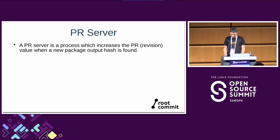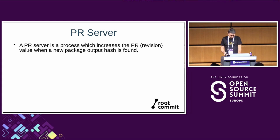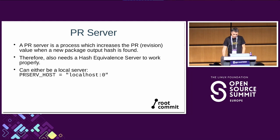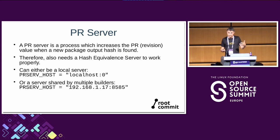Let's talk about the PR server. You need to manage revisions, and there's a process started by Yocto when enabled that computes the revision for the packages you build. Whenever there's a new output with a new hash when building a recipe, the revision is incremented — not the version number, but the revision — so the new package prevails over the previous one. This also requires a proper hash equivalence server. You can set the PR server as local using PR_SERVER_HOST, or point to a remote one, which allows sharing one server among multiple builders. If you don't set PR_SERVER_HOST, you have no PR server at all.